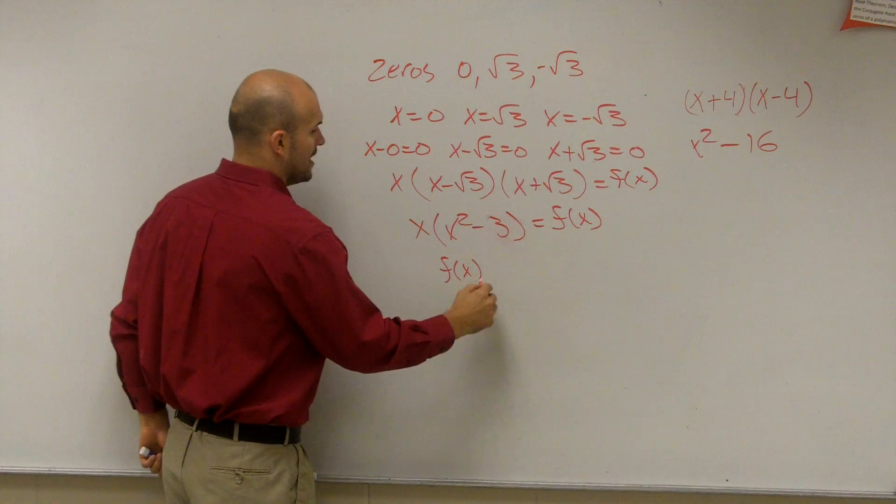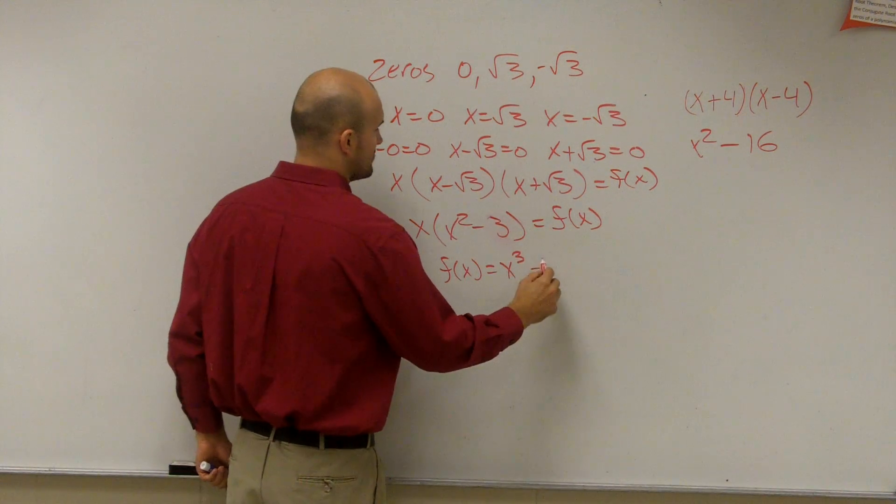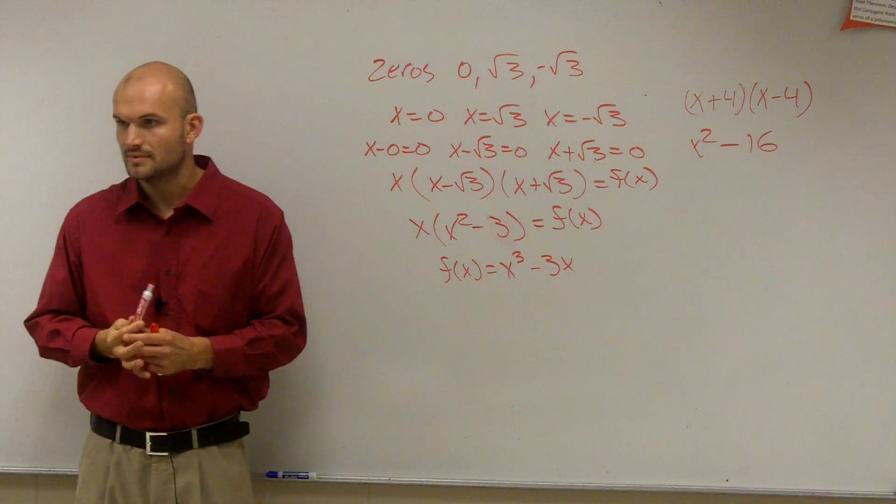Now distribute one more time. f of x equals x cubed minus 3x. Done. Got it? Questions?